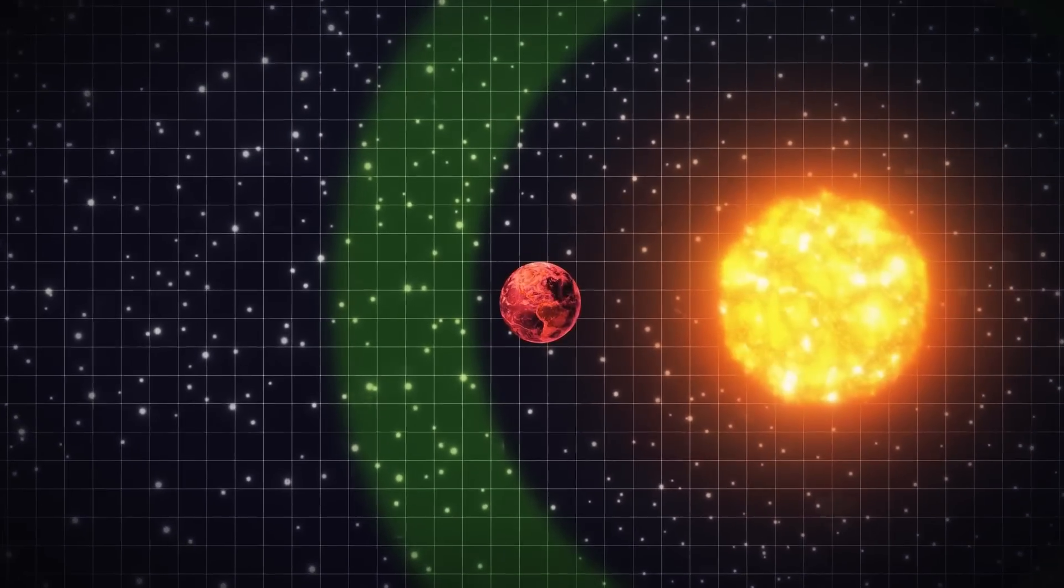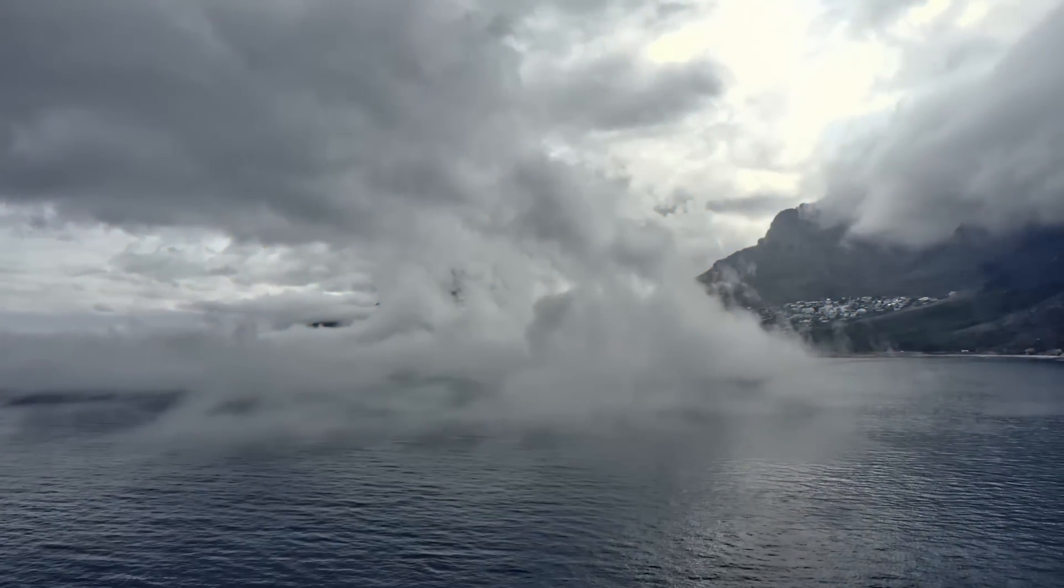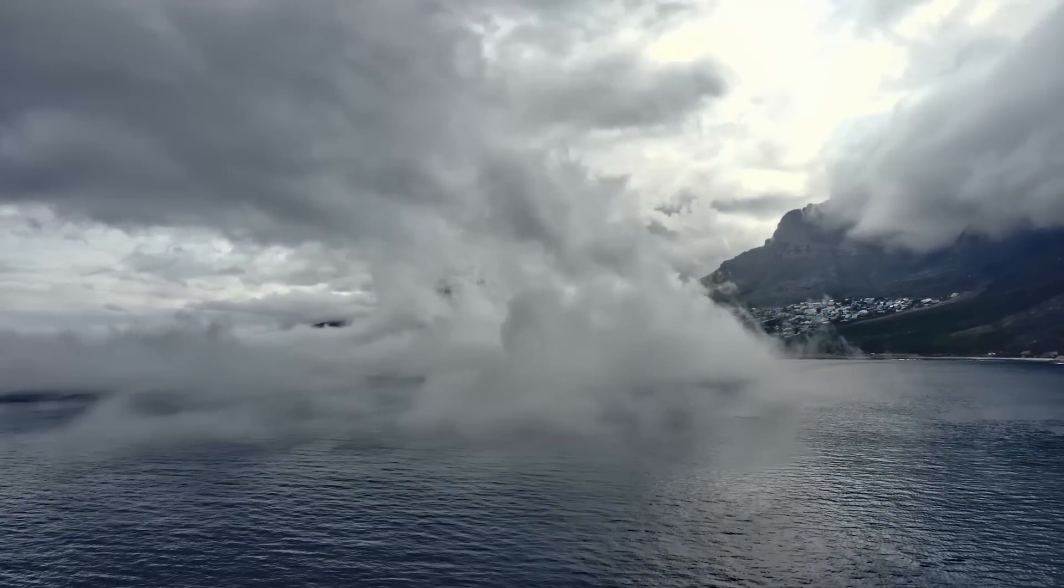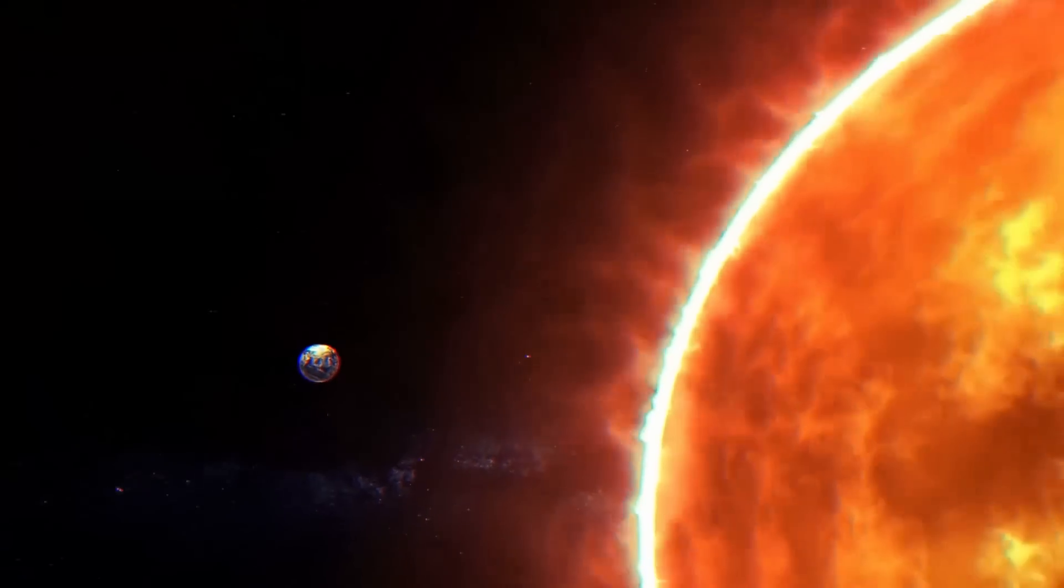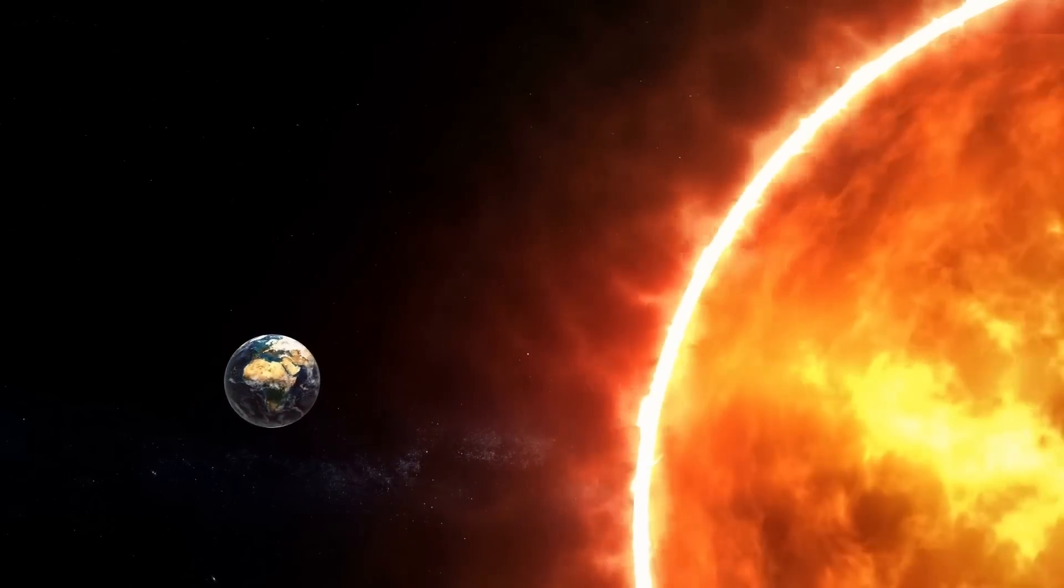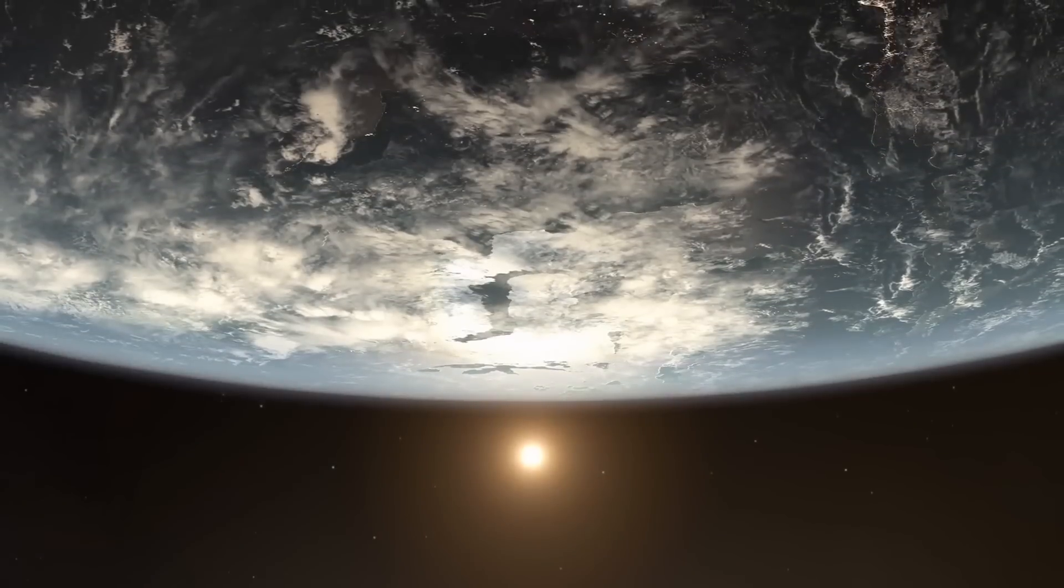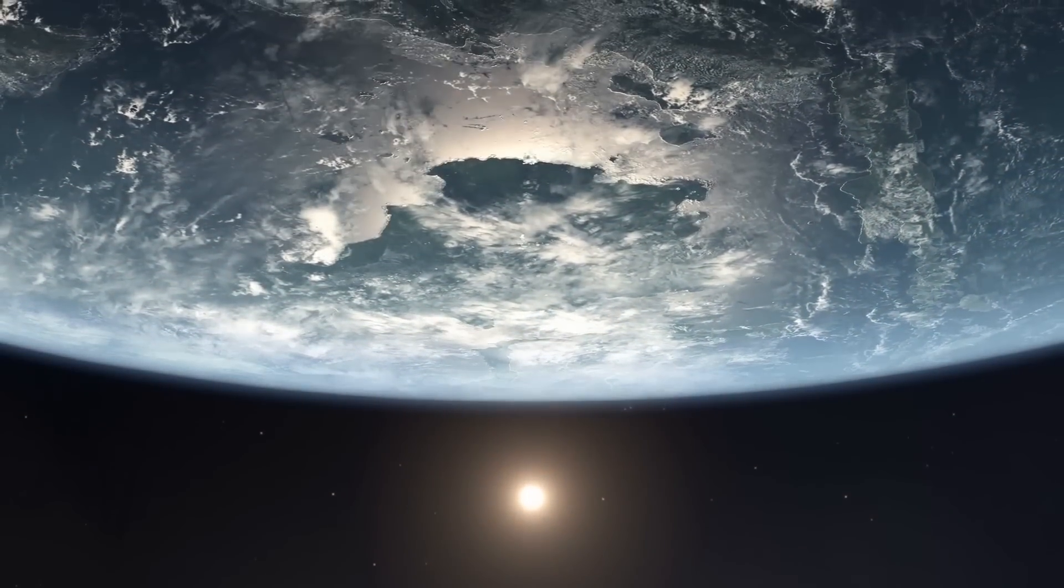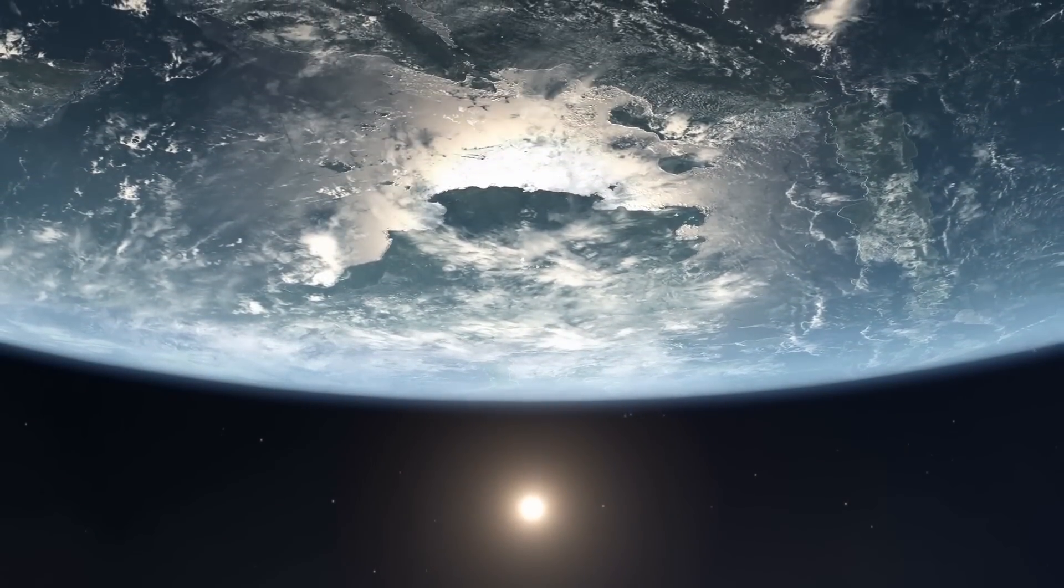Earth will get so hot that our oceans will start to evaporate with a 10% rise in brightness. Unfortunately, nothing gets better after the Sun starts evaporating the waters. Of course, there is some uncertainty about what might actually occur.